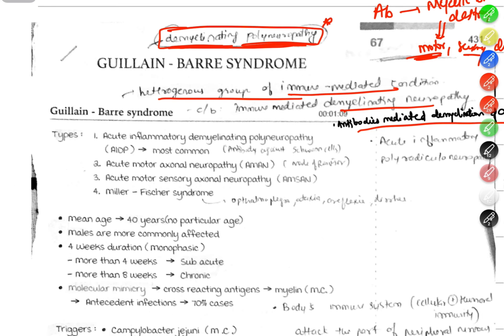GBS has four main types. AIDP, acute inflammatory demyelinating polyneuropathy, where antibodies are formed against the Schwann cell. Second is AMAN, acute motor axonal neuropathy, where antibodies target the node of Ranvier. Then acute motor sensory axonal neuropathy, which affects motor and sensory parts.